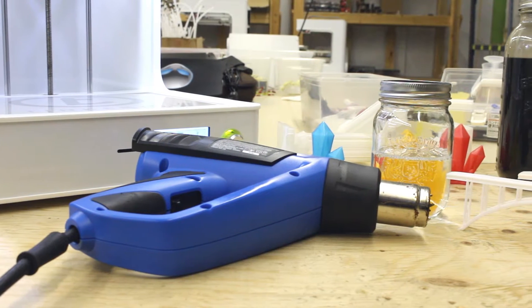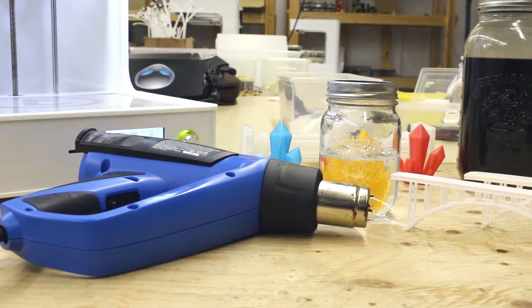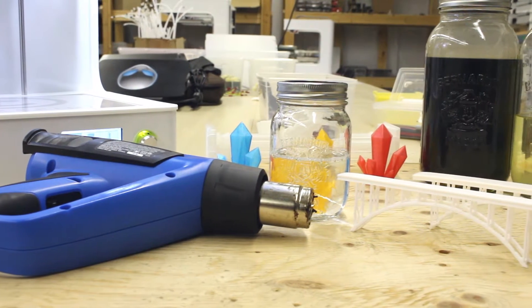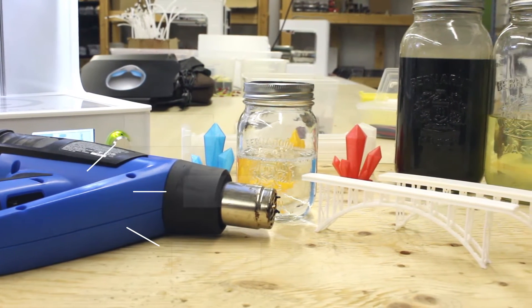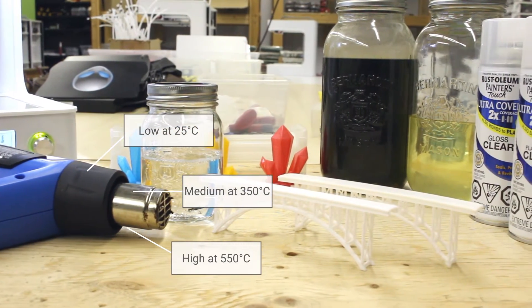We will take a heat gun and heat the HT filament and the regular premium filament up from a distance and see when the plastic will start to deform. There are three settings on the heat gun: low at 25 degrees Celsius, medium at 350 degrees Celsius, and high at 550 degrees Celsius.